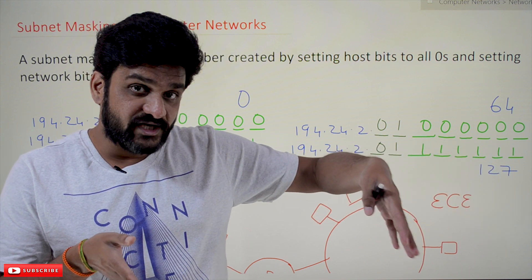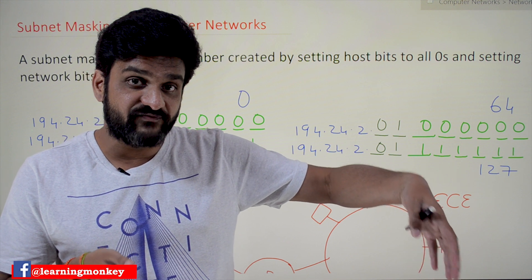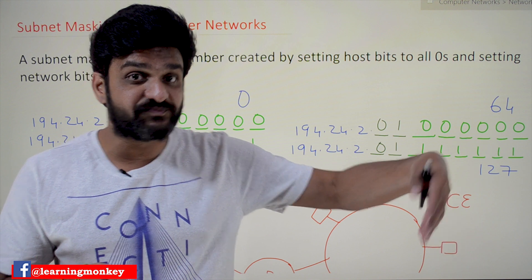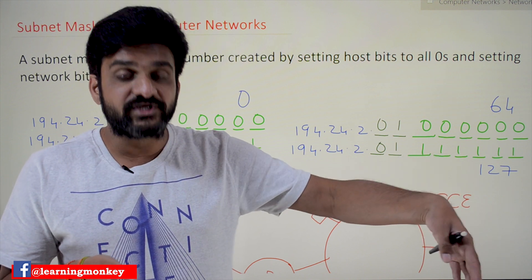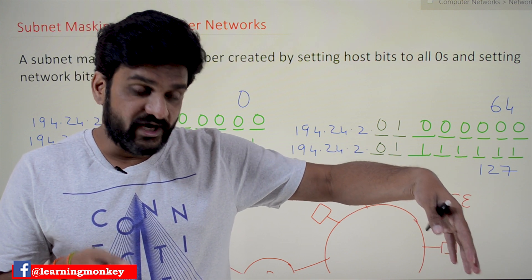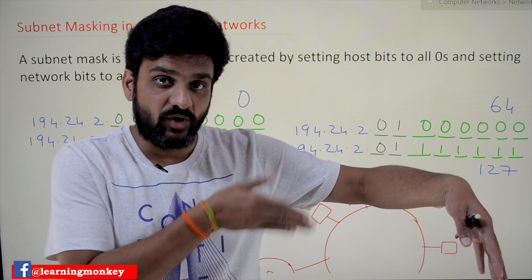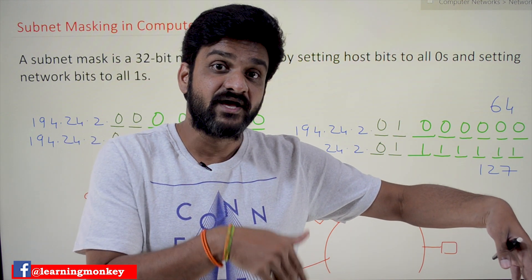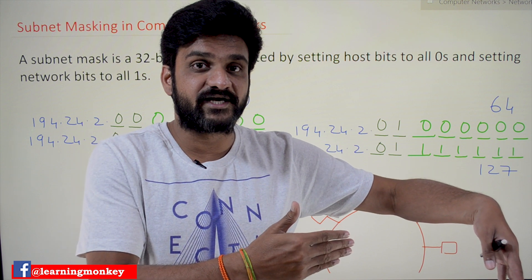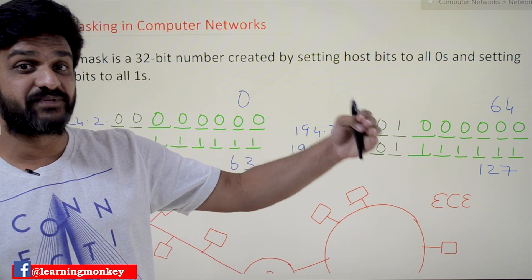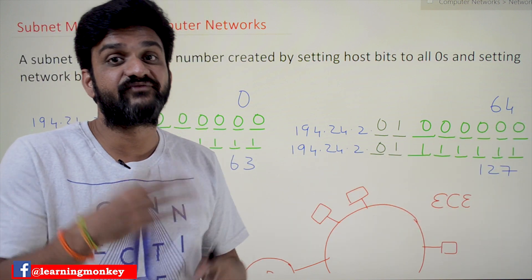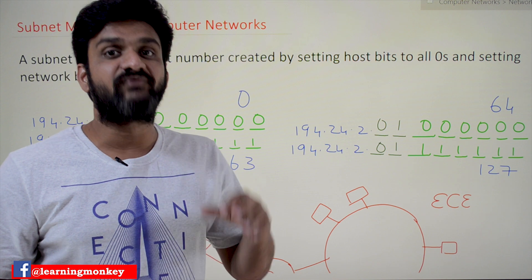Within the IP address, all the bits allocated for the network ID — including the subnet number, since the subnet is also expressing the network — are assigned ones. All bits allocated for the host are assigned zeros. That is the way in which we create a subnet mask.